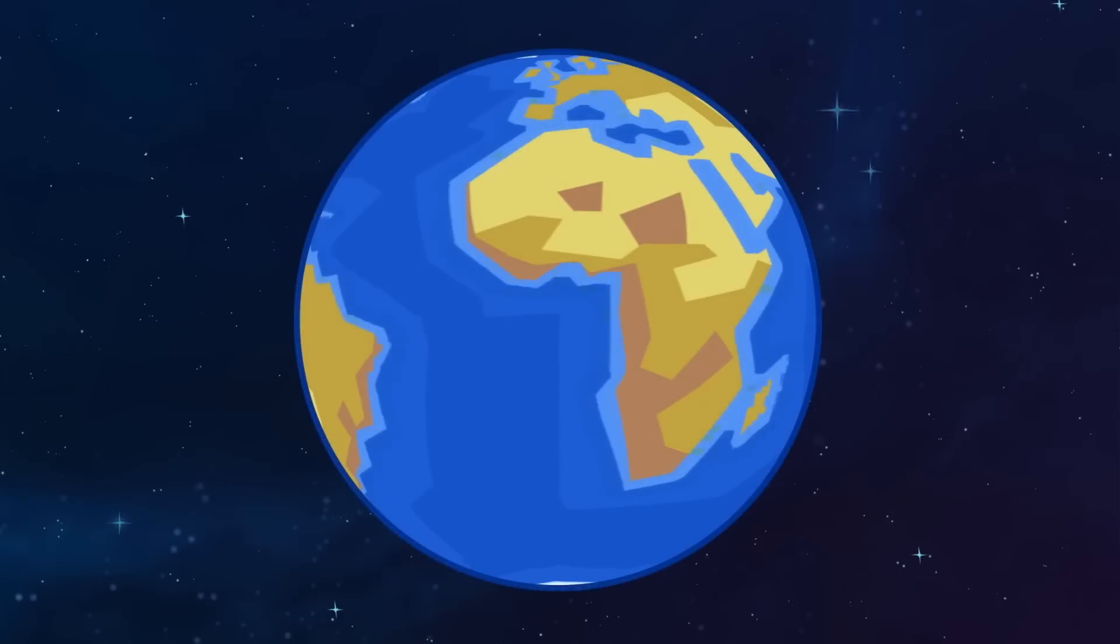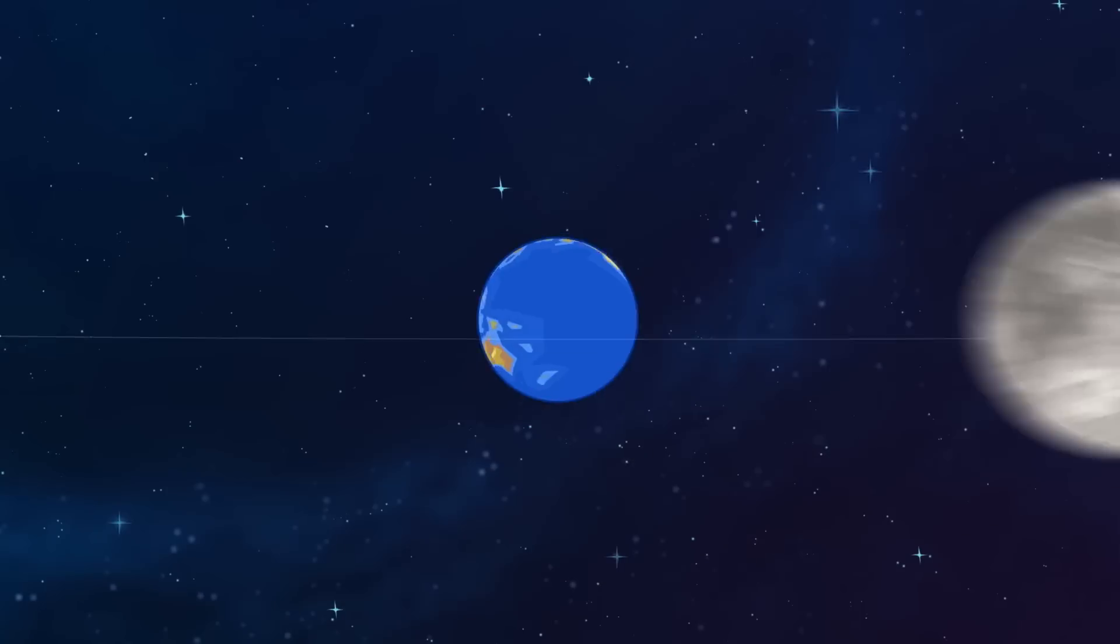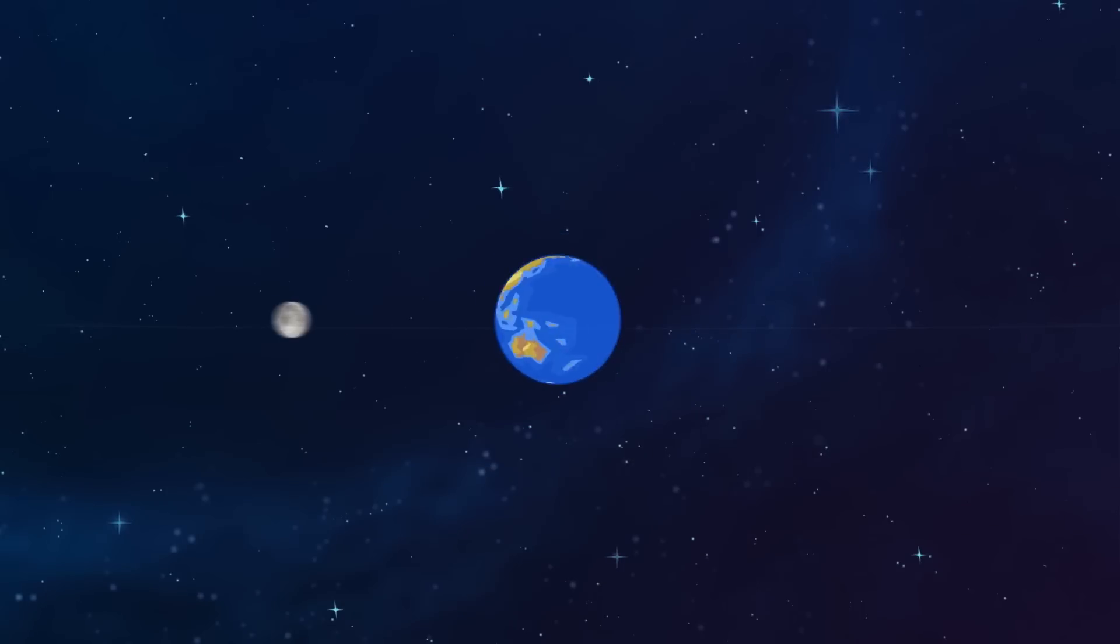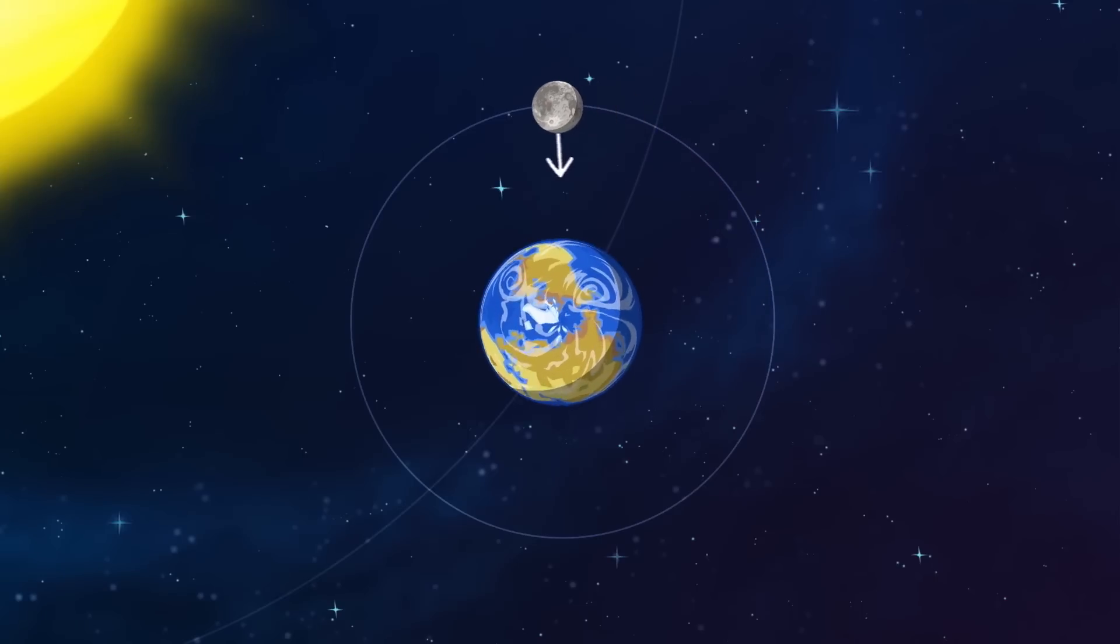The moon is basically a big piece of rock circling the Earth. It orbits us synchronously, which means that it always has one side facing us. The other side of the moon we call the far side.